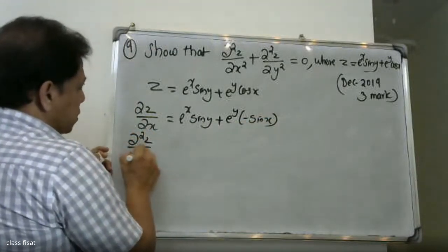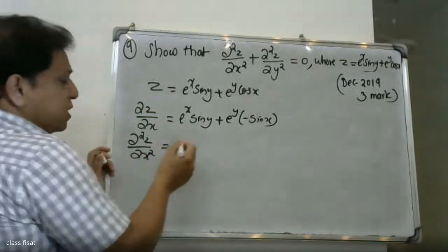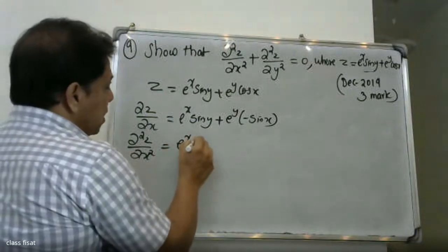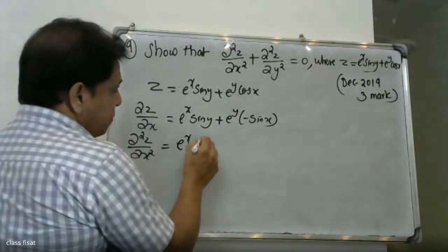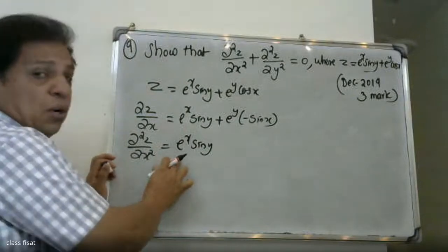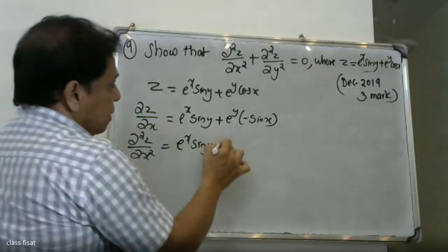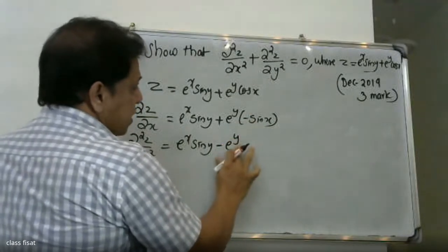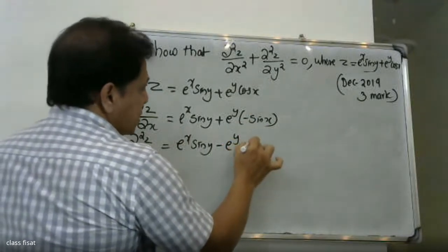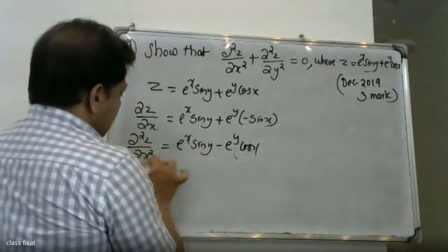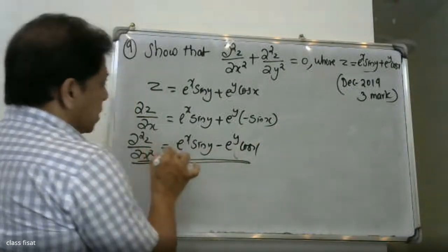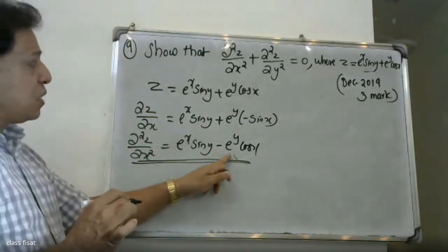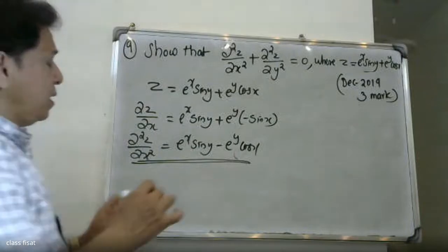Now dou square z by dou x square: differentiating the function with respect to x again. The result is e raised to x sin y — sin y constant, e raised to x differentiate gives e raised to x. This gives e raised to x sin y. Minus e raised to y into sin x. So dou square z by dou x square equals e raised to x sin y minus e raised to y sin x. This is equation one.